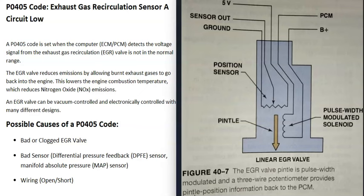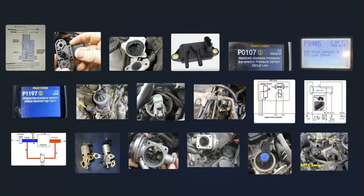The last cause on the list is a wiring issue, and that's basically it. This was a basic overview of how to go about fixing a vehicle with a P0405 code. If you have anything to add, please comment below. If you have questions, ask and I'll try to answer. If this video helped you, please click like and subscribe, and have a good day.